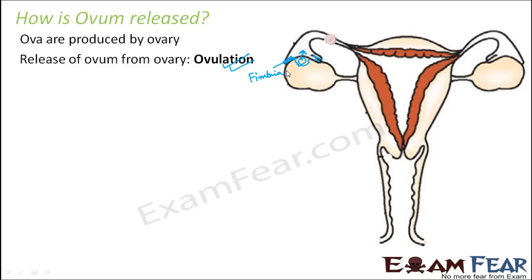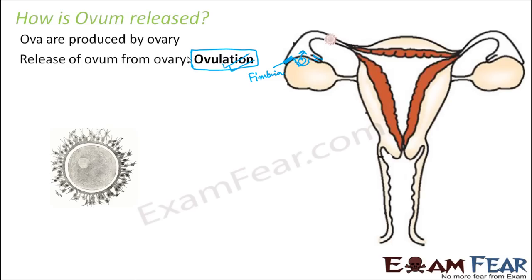Ovulation is an extremely important process. If ovulation is not taking place properly in any female, she might face reproductive issues and problems in conceiving.